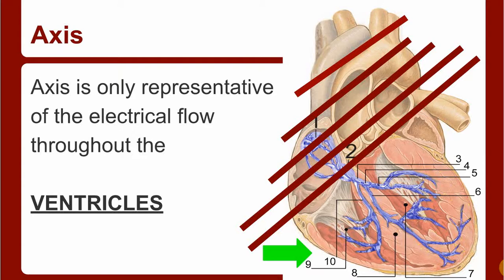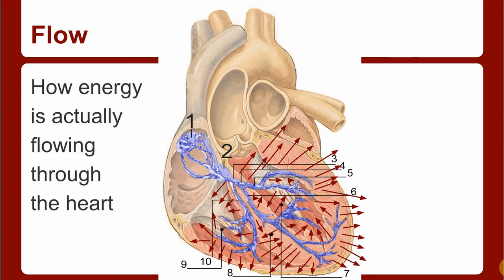There are EKG machines that can get upper level axis and stuff like that, and that kind of stuff is usually better left to a physician or cardiologist when it comes to diagnosing things.